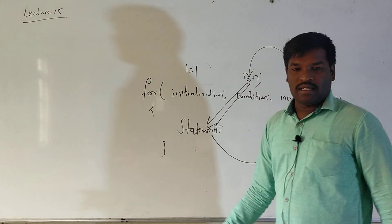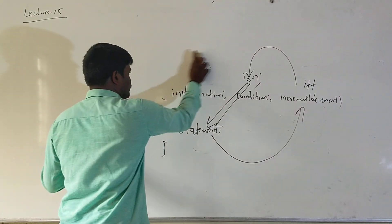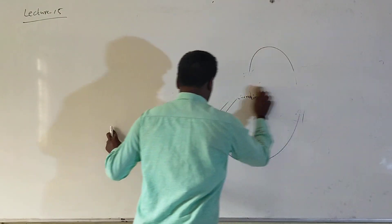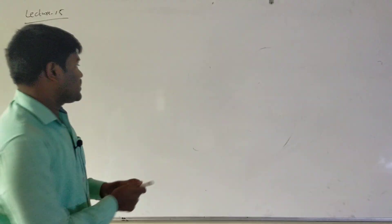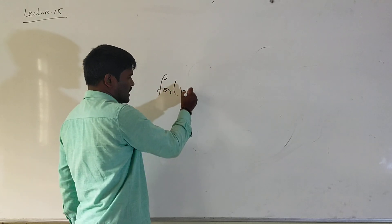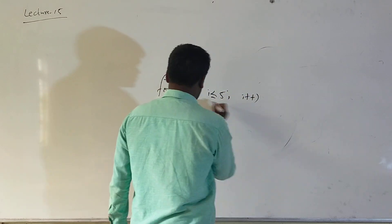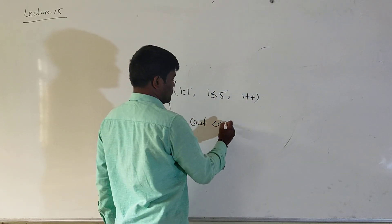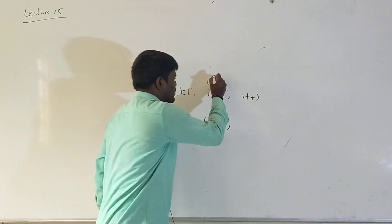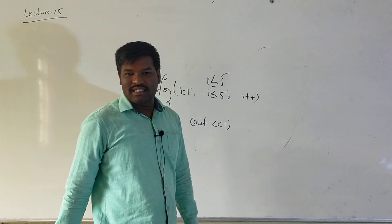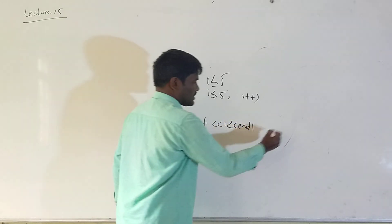When the condition becomes false, automatically the loop will be terminated — it will come out of the loop. Let me write one example. The logic is: i equal to 1, i less than or equal to 5, i++. Initially i is equal to 1. 1 is less than or equal to 5, so the condition is true. Since the condition is true, it prints 1.